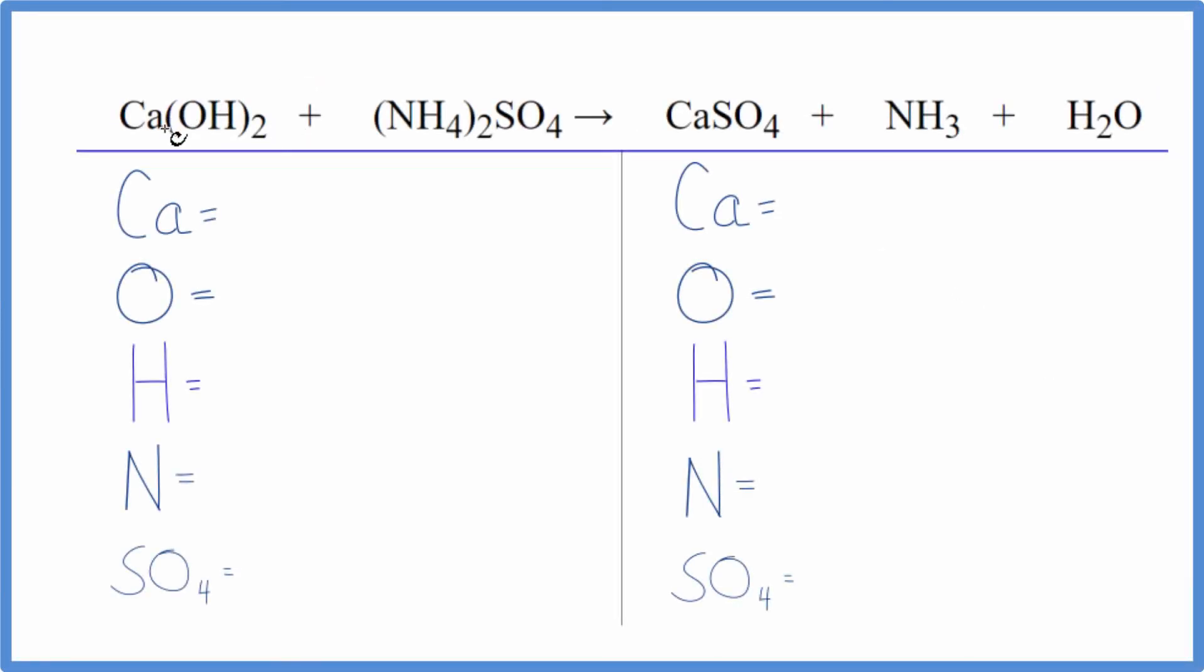In this video we'll balance the equation for calcium hydroxide plus ammonium sulfate. There's a lot of things going on here. Let's count the atoms up and use a bit of a trick to help us out. We have one calcium and then oxygen's two times one, we have two of those. I'm going to leave this sulfate ion for later.